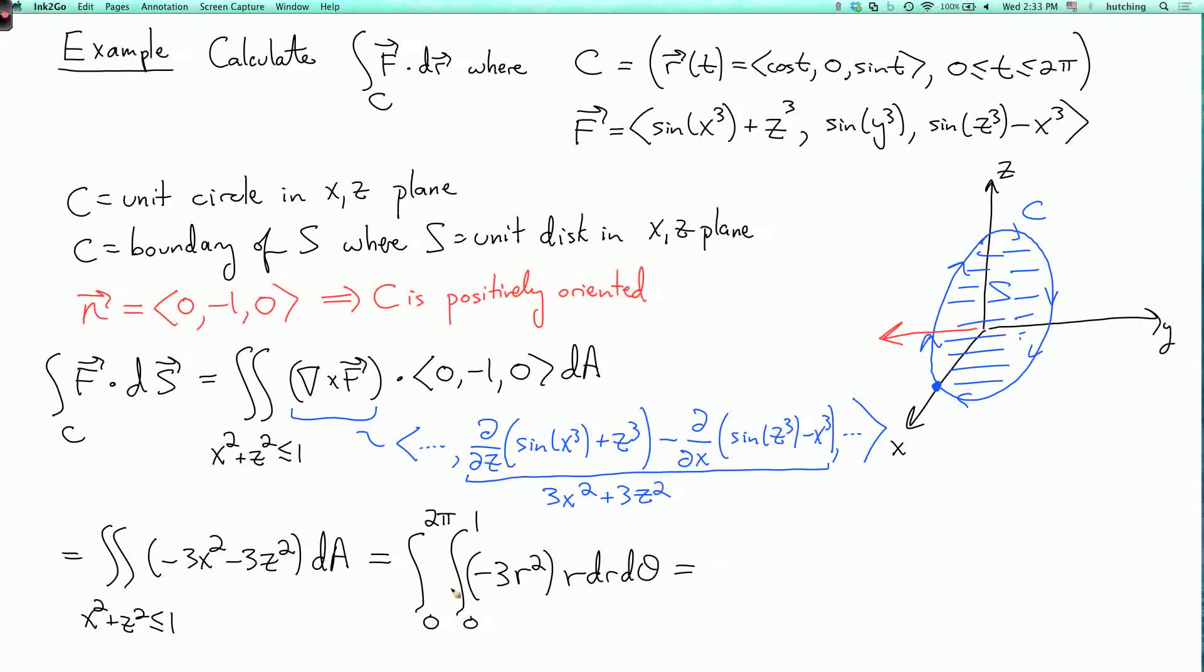So this doesn't depend on θ, so I just multiply by 2π. And the thing that I'm multiplying by 2π is -3 times the integral of r³ from 0 to 1. So that's -3/4. And the final answer is -3π/2.